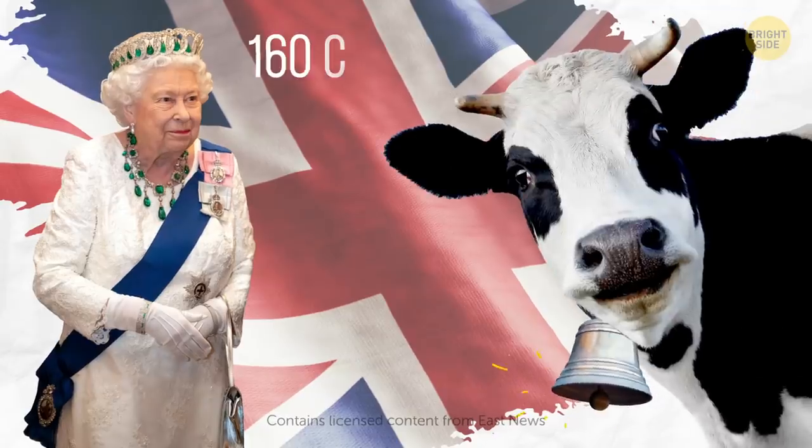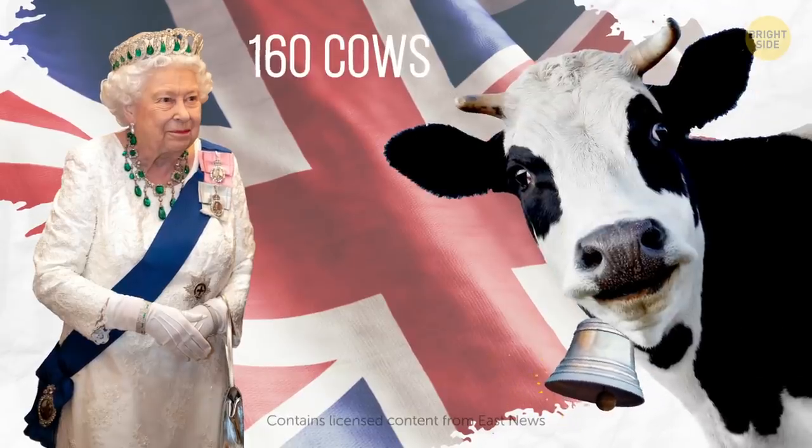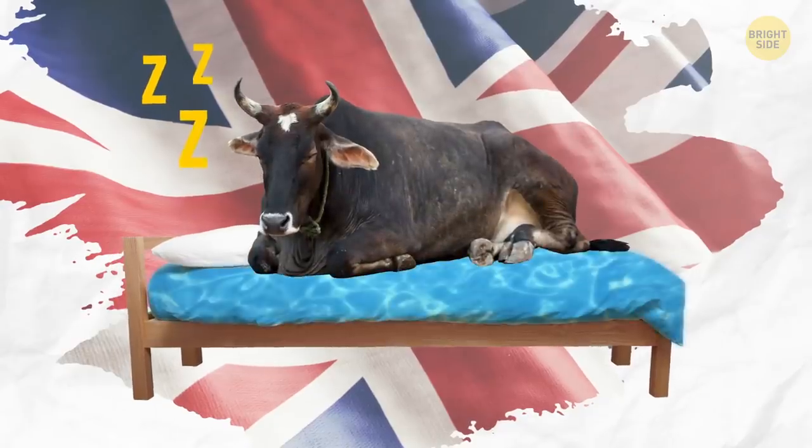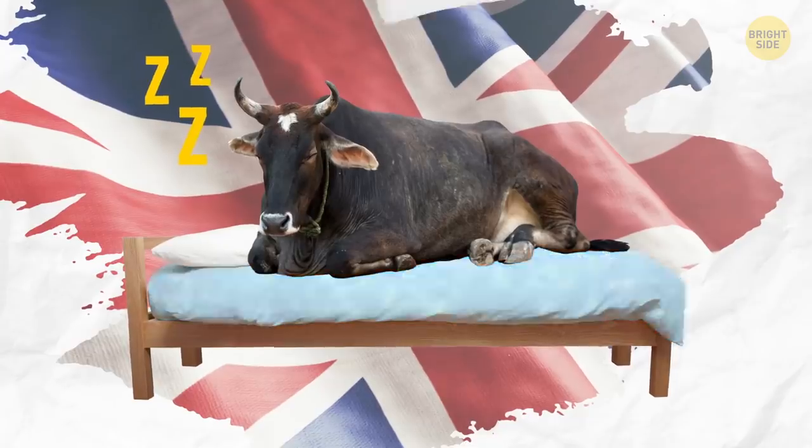Queen Elizabeth II owns more than 160 cows. Yep, it's the royal herd. These animals are so pampered that they sleep on waterbeds to feel maximum comfort.